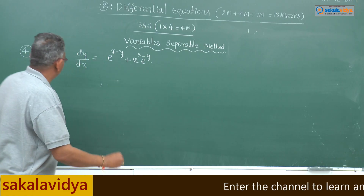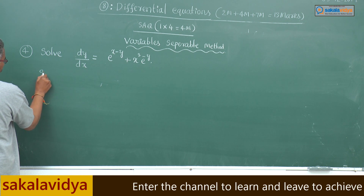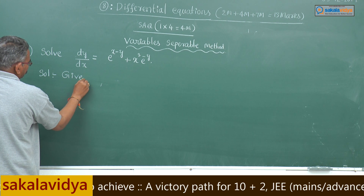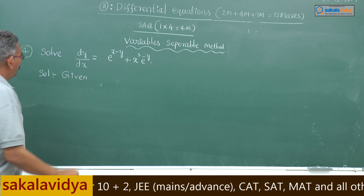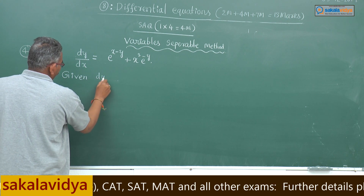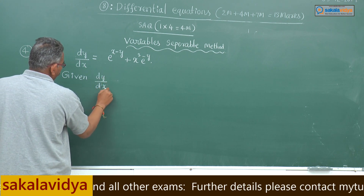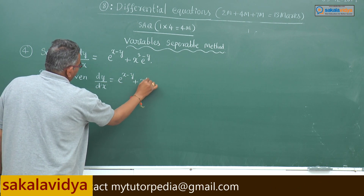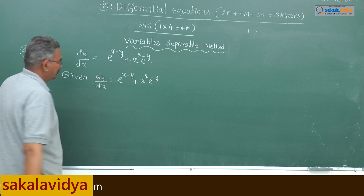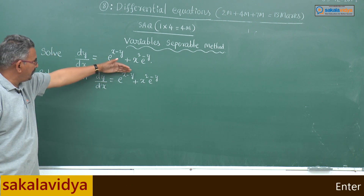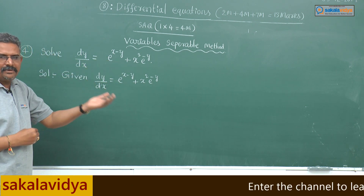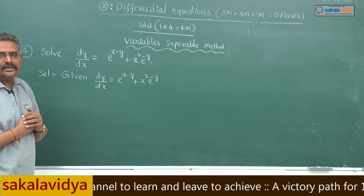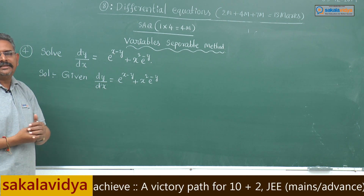Let us solve one more problem. The solution is given: dy/dx equals e^(x minus y) plus x squared e^(minus y). First, let us write e^(x minus y) as e^x by e^y. Next, x squared e^(minus y) can be written as x squared by e^y.